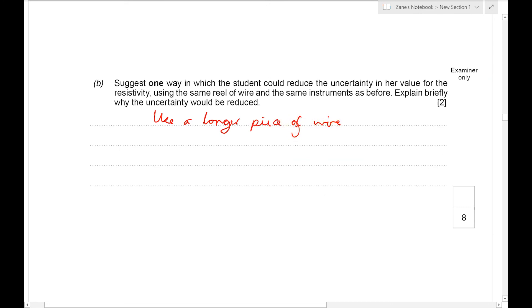Now, some people would say that that's great because it reduces the percentage uncertainty in the length, but the percentage uncertainty in the length is already very, very small. It's 0.1 compared to 2.2 and 4.5 or whatever figures that we got earlier. So it's using a longer wire to increase the resistance, which will reduce the percentage uncertainty in the resistance.